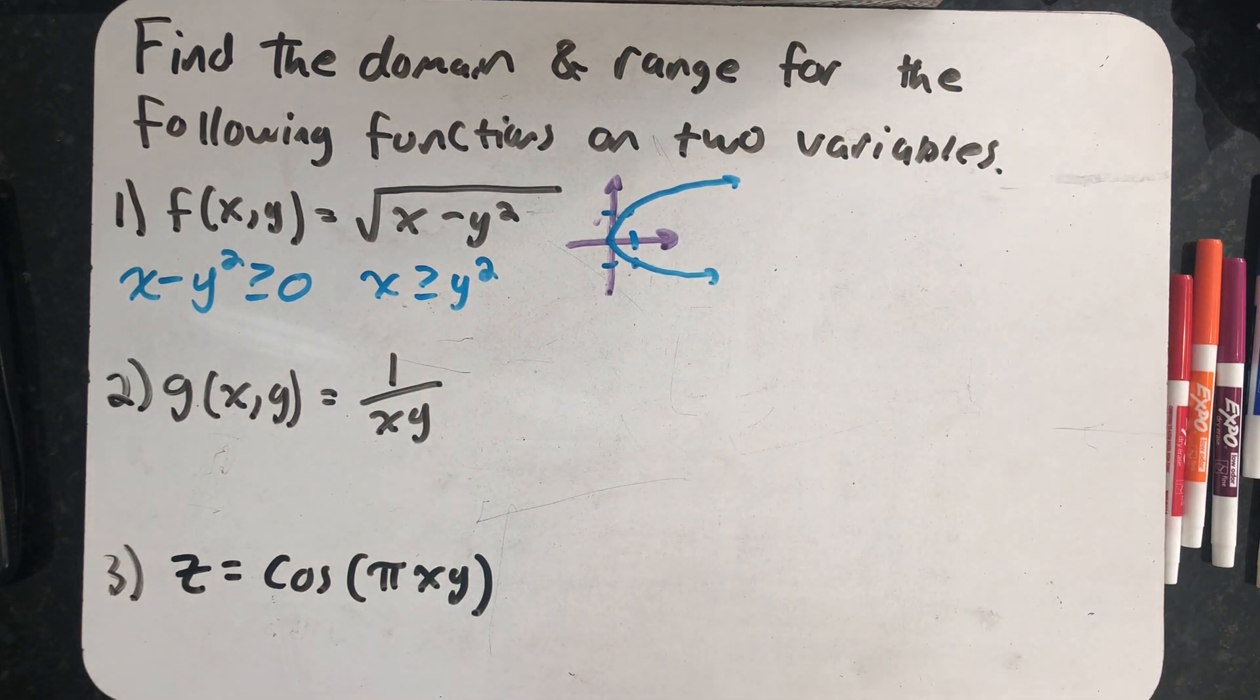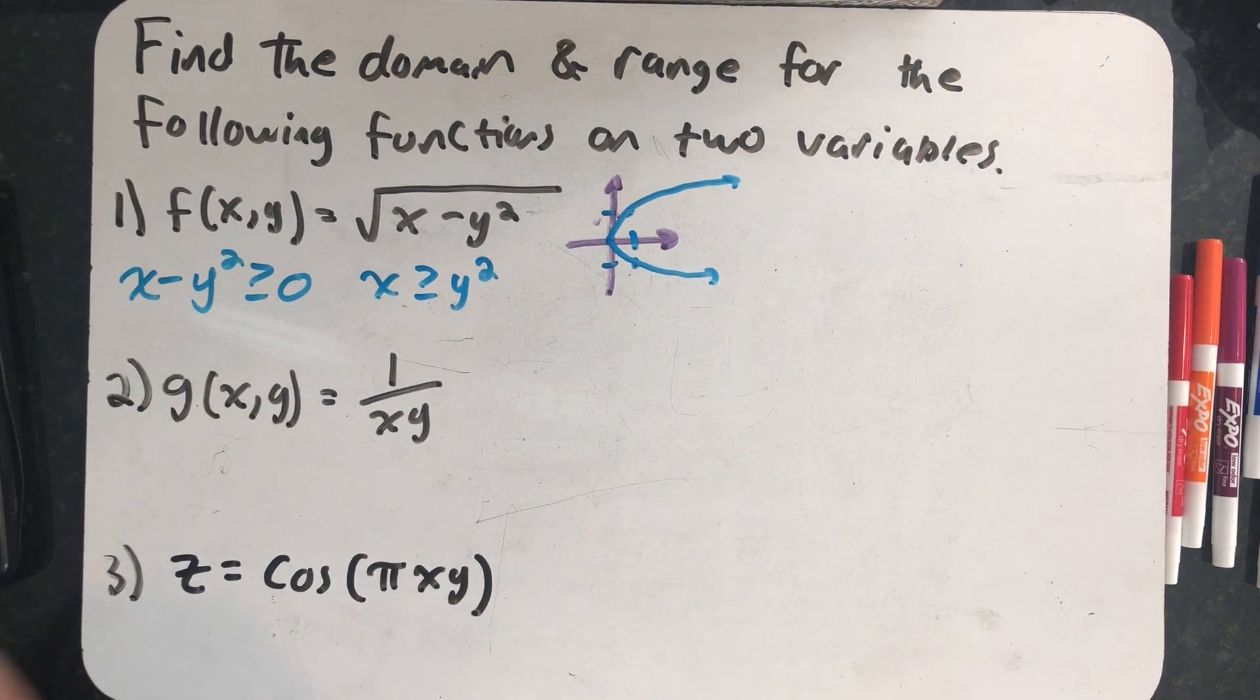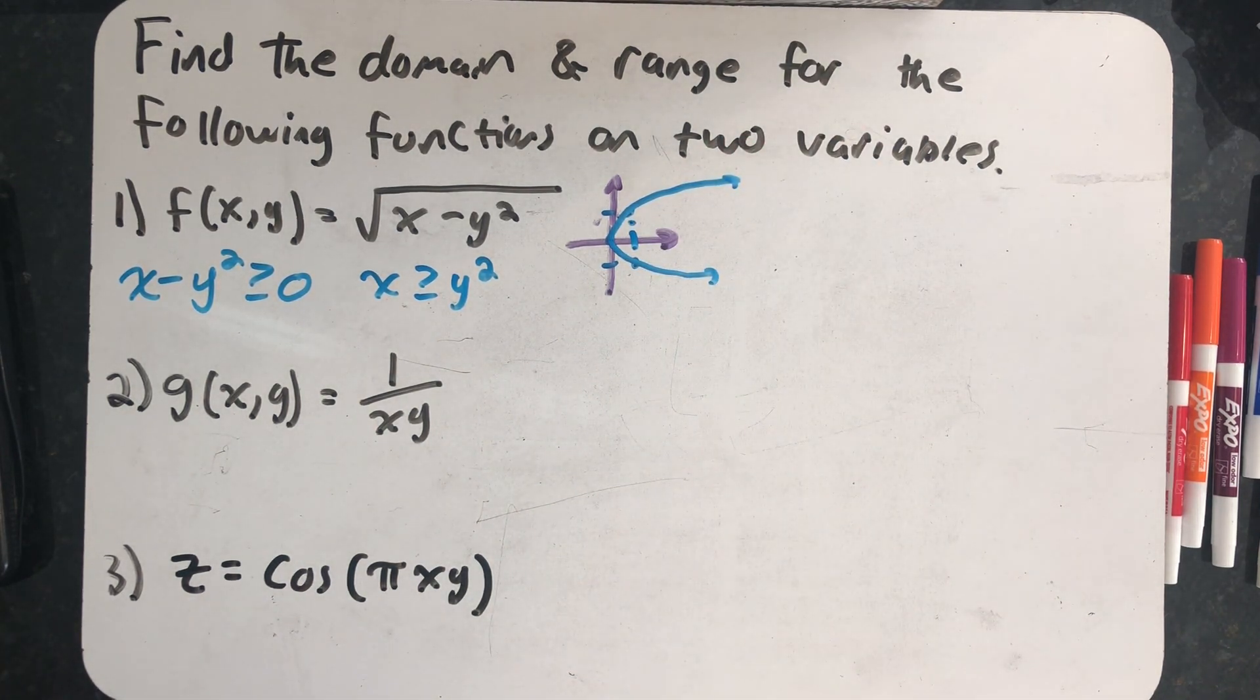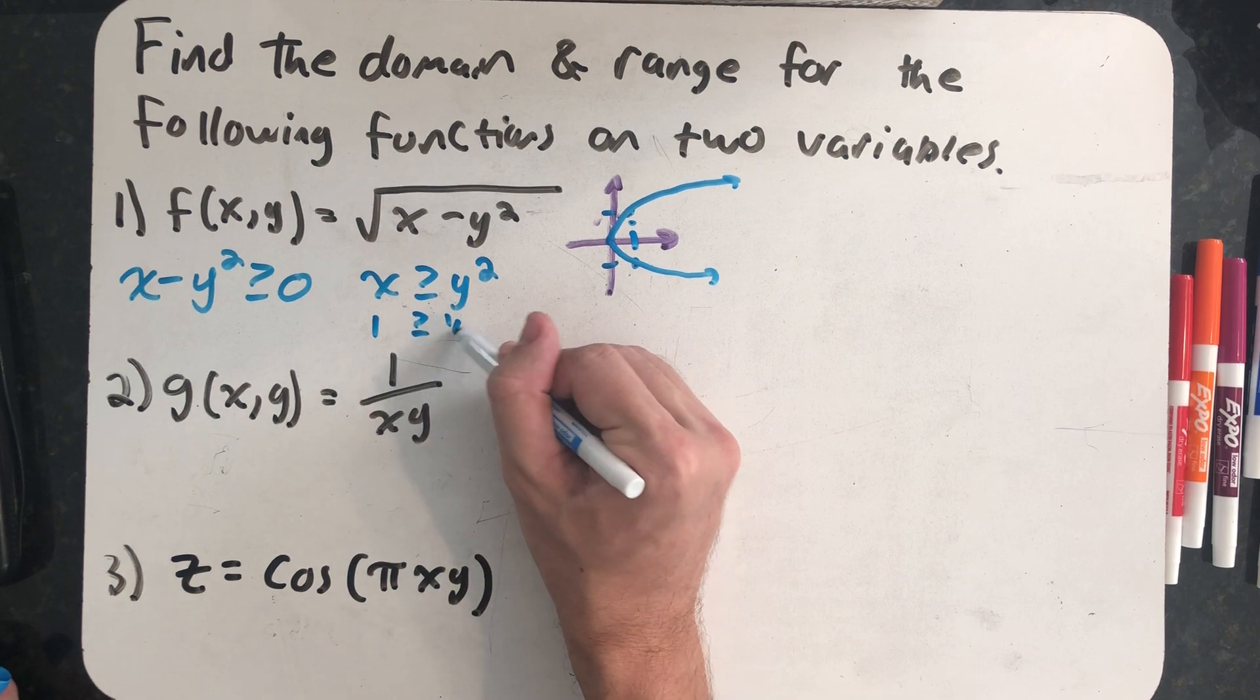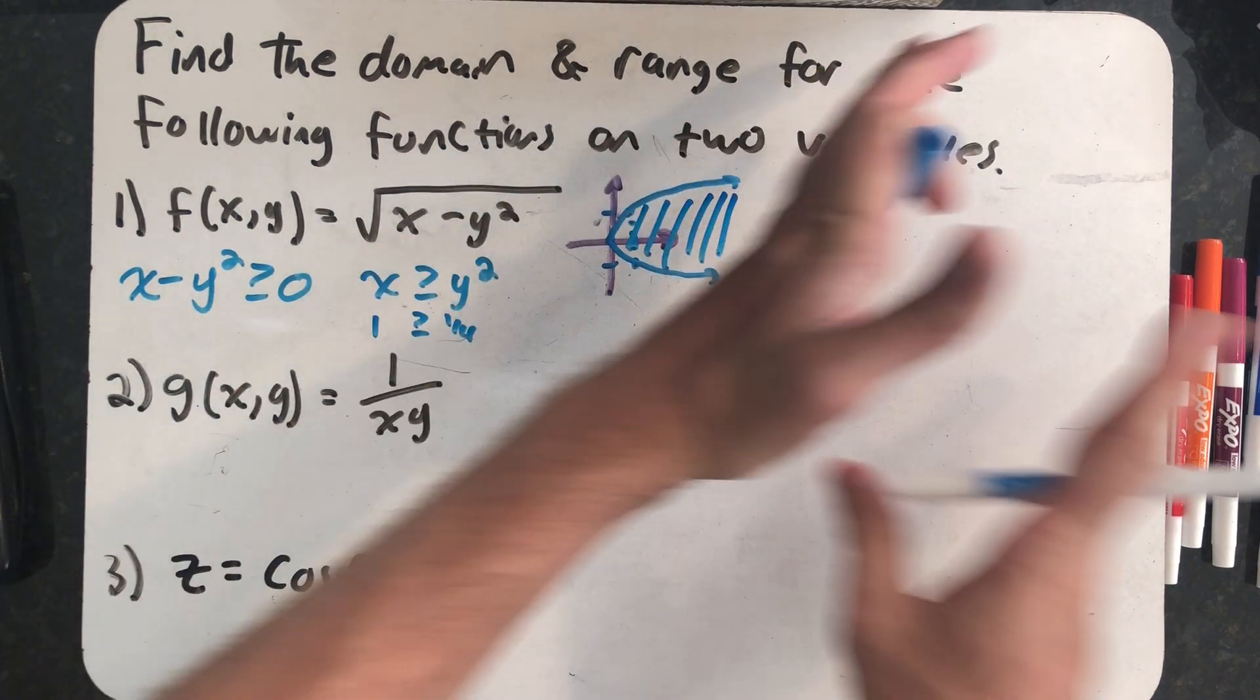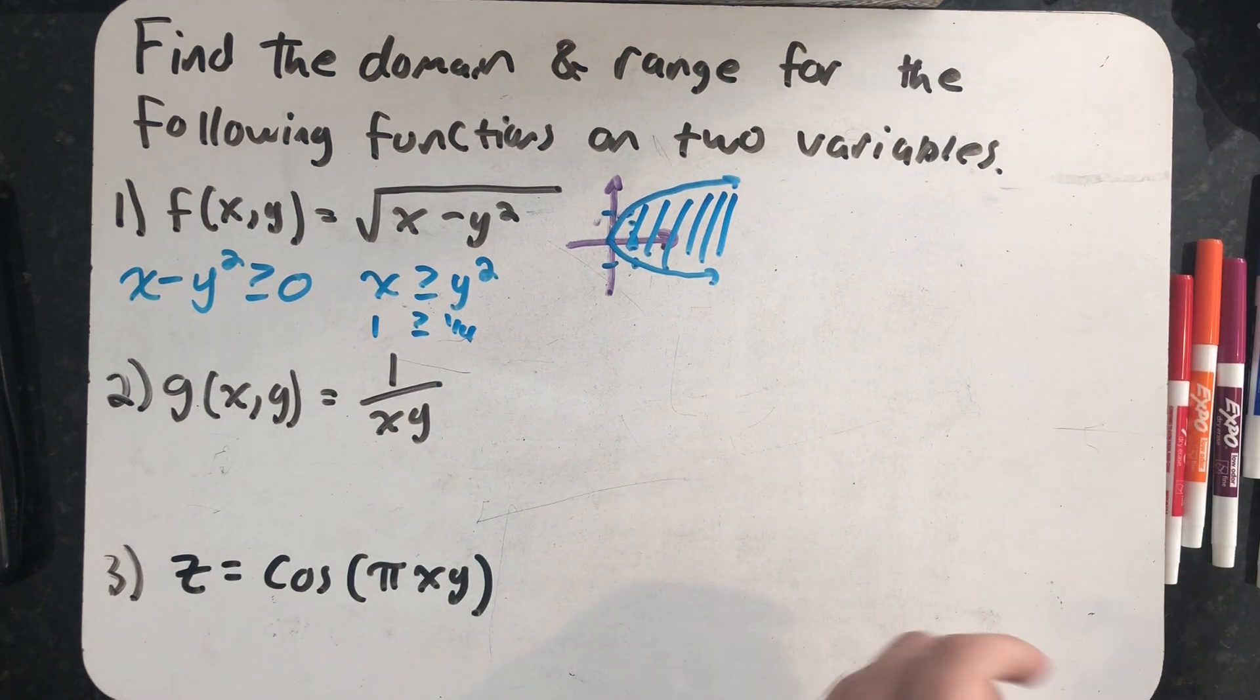Now I need to think about the points where x is bigger than y squared and shade those too. I can use an old trick where I pick a sample point like one comma one half and plug it in and see if it satisfies the inequality. So x is one and y is one half and that works. So all of my points I need to shade are in this region. It goes on forever and that would be my domain.